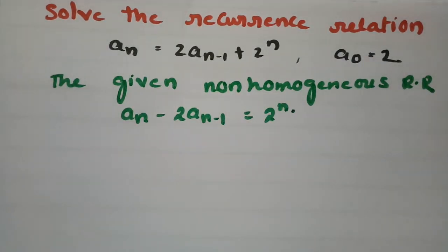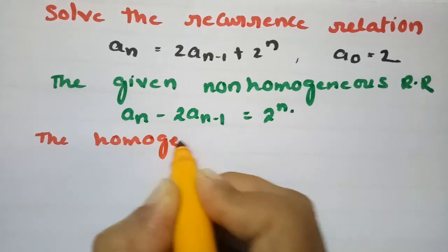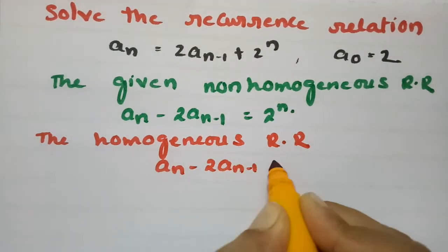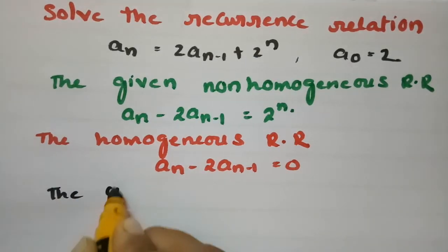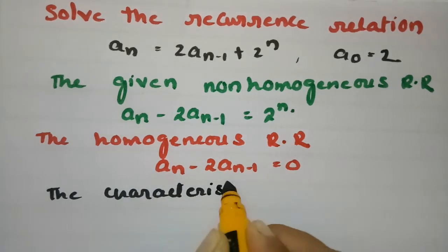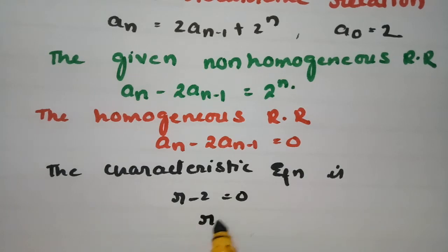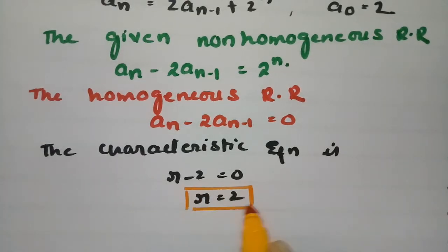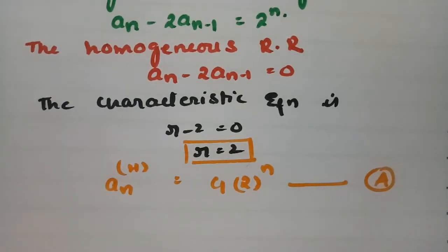First we find the characteristic equation. The homogeneous recurrence relation is aₙ − 2aₙ₋₁ = 0. The characteristic equation is r − 2 = 0, giving r = 2. So the characteristic root is 2, and the homogeneous solution is aₙ⁽ʰ⁾ = c₁ · 2ⁿ.